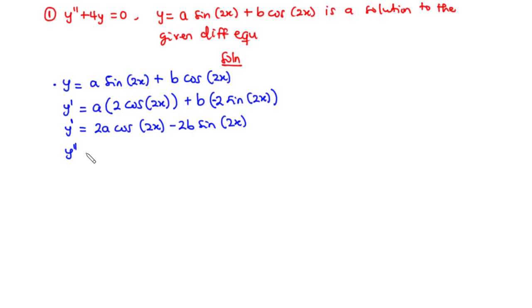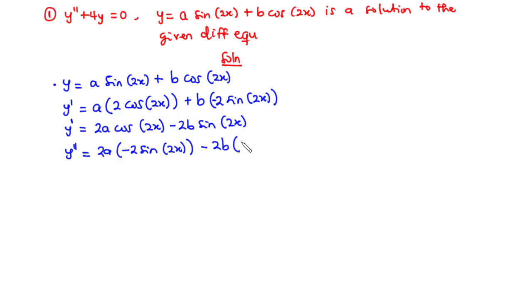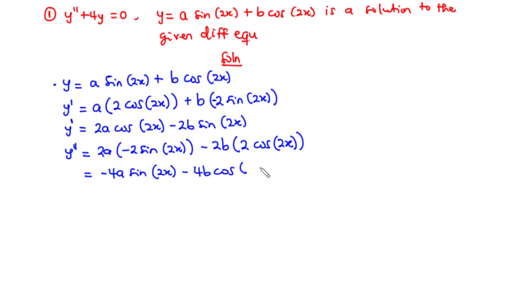For y'': 2a is a constant. Differentiating cos(2x) gives −2·sin(2x), and differentiating sin(2x) gives 2·cos(2x). So y'' = 2a·(−2·sin(2x)) − 2b·(2·cos(2x)), which simplifies to y'' = −4a·sin(2x) − 4b·cos(2x).